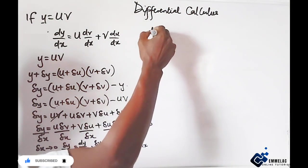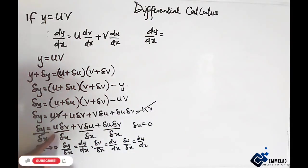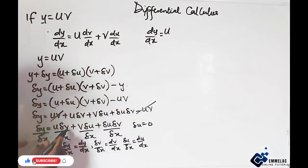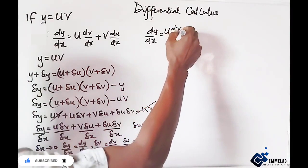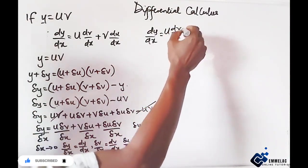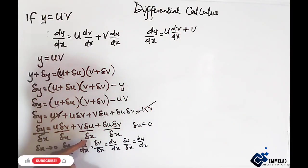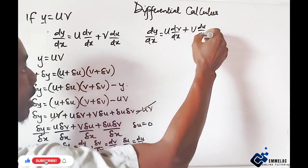Change in v over change in x becomes dv/dx, so dv/dx. Plus v, now change in u over change in x becomes du/dx.